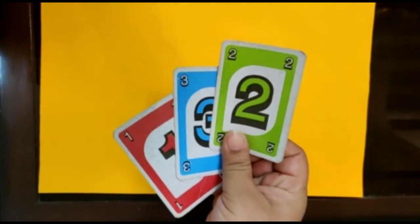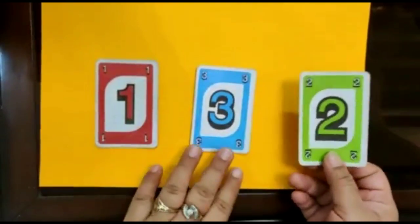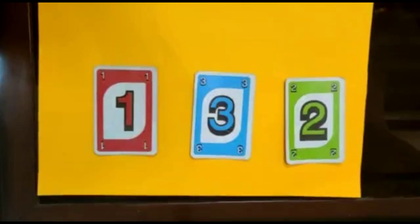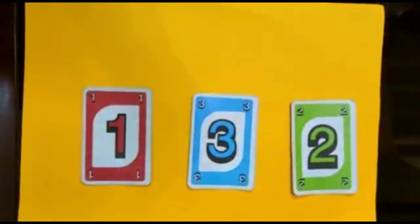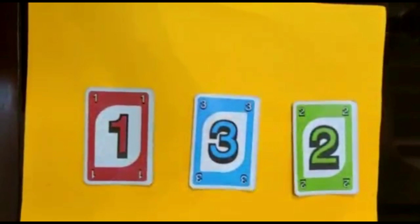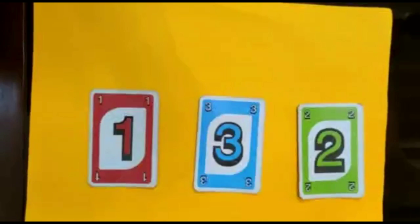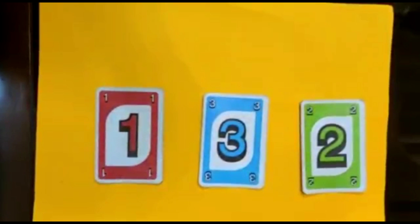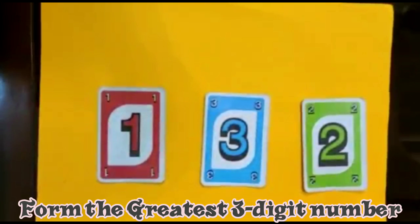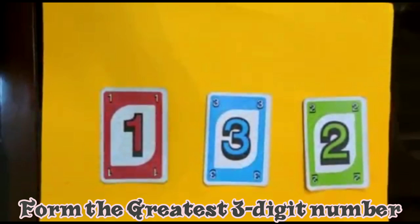I have got three cards: 1, 3, and 2. These are the three digits which we are going to use to create the magic. We are going to create different numbers using these three digits 1, 3, and 2. First of all, let us learn how to create the greatest three-digit number using these digits.